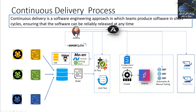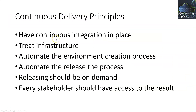If changes are needed — for example, new infrastructure is required — the operations team makes changes to the configuration or script file, checks it in using their own source control mechanism, and runs it. Only one change needs to be made and all nodes are updated. The key Continuous Delivery principles include: have Continuous Integration in place — CD is nothing without CI; treat infrastructure as code, not as a manual process; automate the environment creation process; and automate the release process. Everything should be automated.